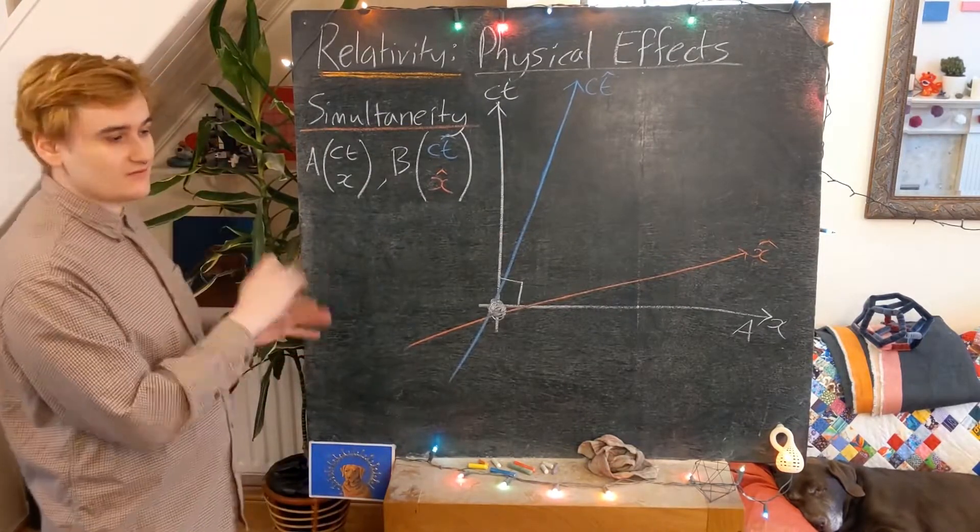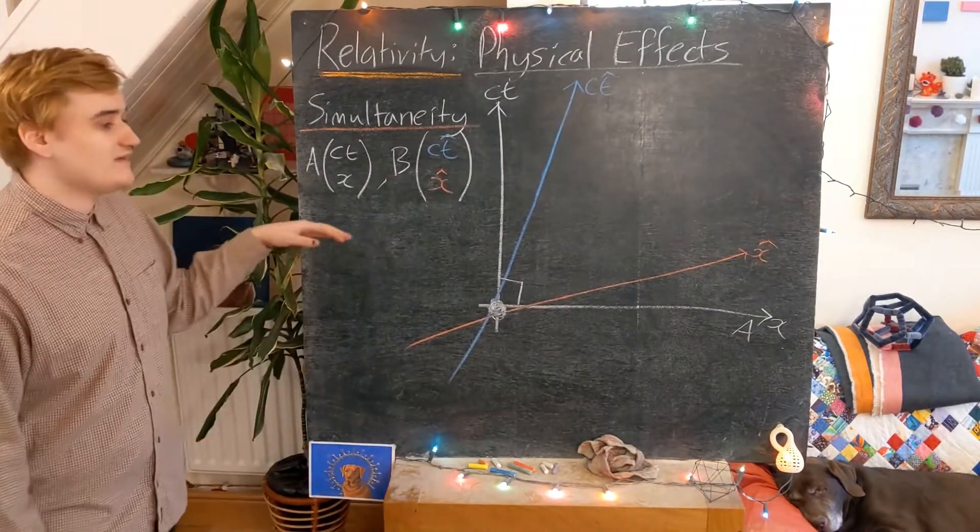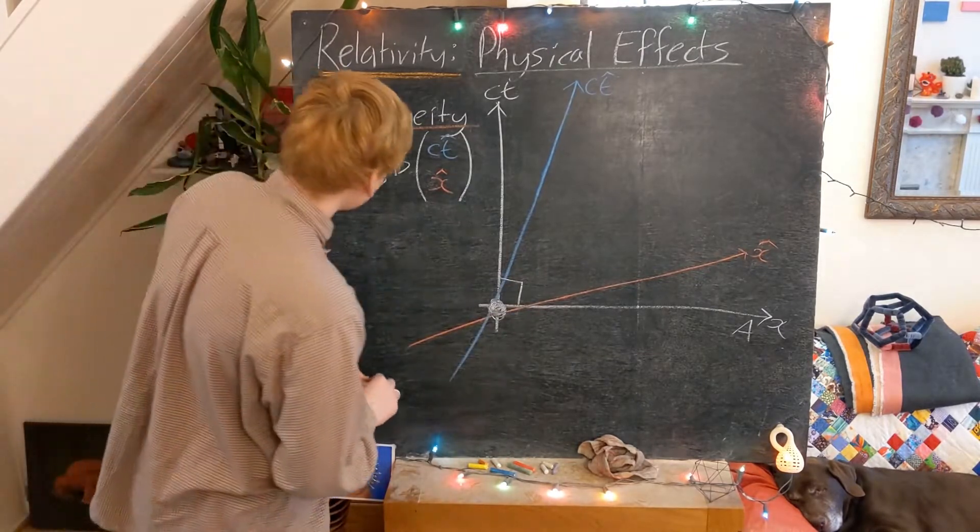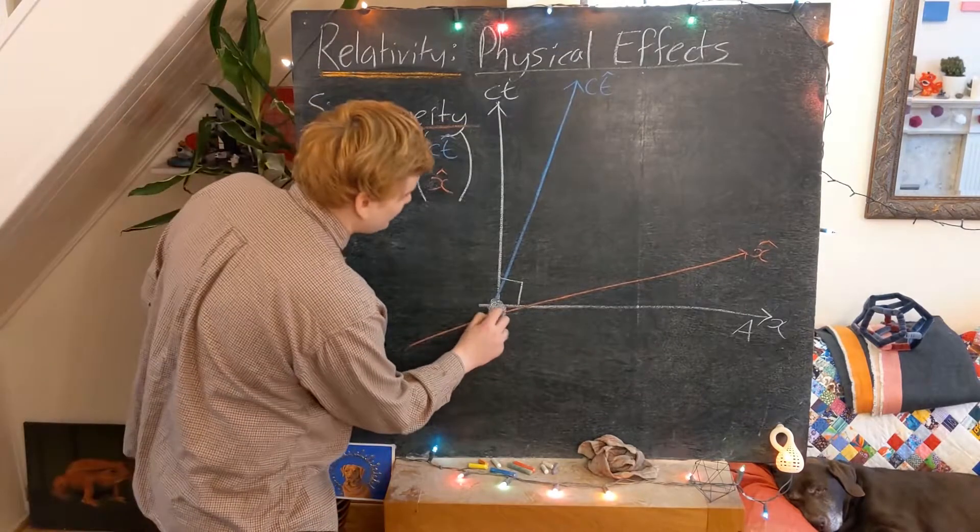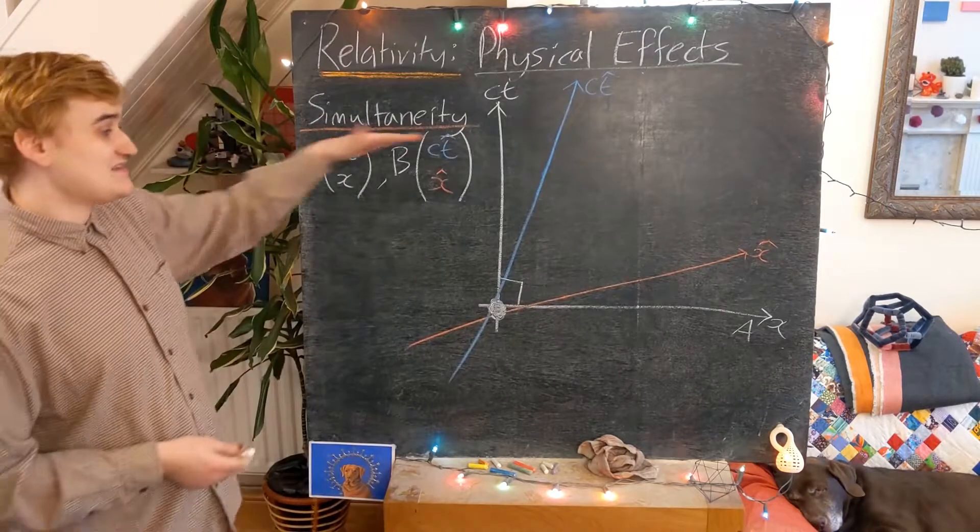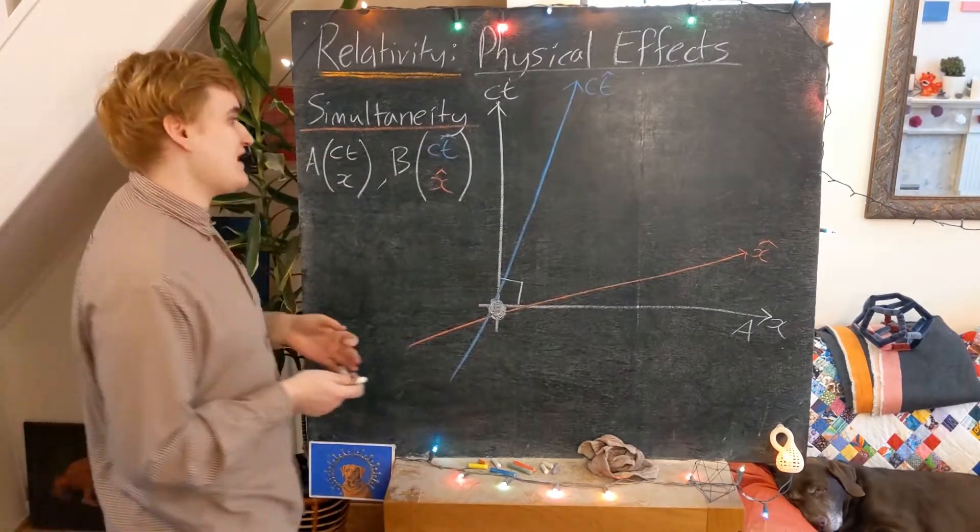And so now we're simply going to be able to discuss simultaneity on this figure purely geometrically. So how would I now visually represent the notion of simultaneity? Well, simultaneity means events happening at the same time.